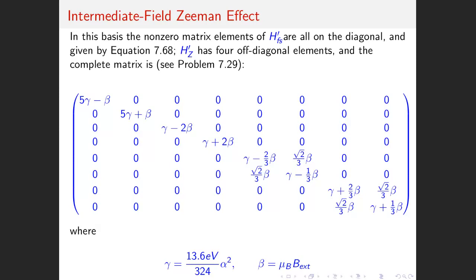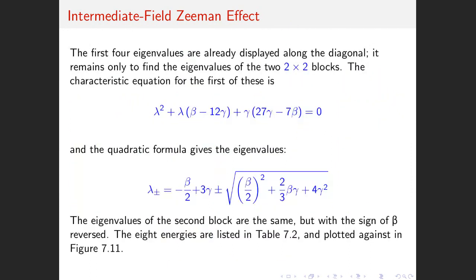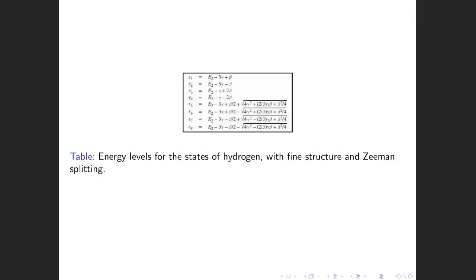For n=3 you are going to get an 18×18 matrix. You first have to compute the Clebsch-Gordan coefficients — that long-winded process — and then find Hz. One of the exercises does ask you to check what happens when B is small: do you recover the results you get for the weak-field limit? These are the eight eigenvalues; you can plot them all.